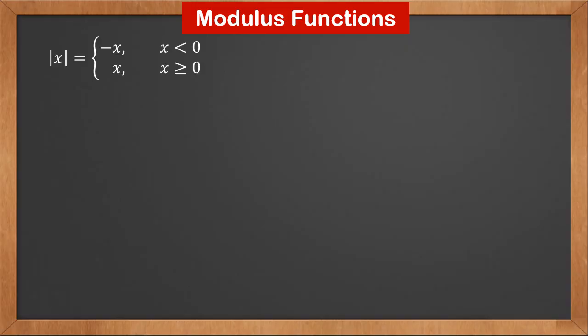The modulus of x is minus x when x is less than 0, and x when it's greater than or equal to 0. For example, the modulus of 5 is 5, and the modulus of minus 5 is also 5. You basically throw away the sign to get the modulus.